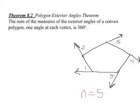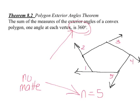Theorem 8.2, polygon exterior angles theorem. The sum of the measures of the exterior angles of a convex polygon, one angle at each vertex is 360 degrees. That means this is a pentagon. So the sum of the exterior angles, one angle at each vertex equals 360 degrees. No matter what your N is, you're always going to have 360 degrees.